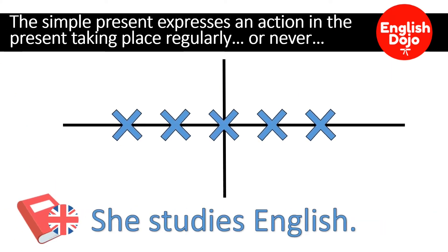Por ejemplo, she studies English. Ella estudia inglés. Probablemente lo haga a diario, probablemente lo haga cada semana, o cada mes. No importa. Y lo que expresa es que ella realiza esa acción habitualmente.